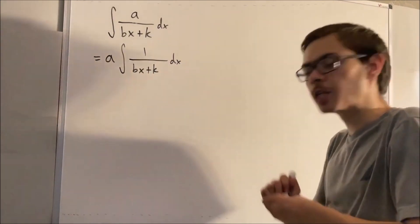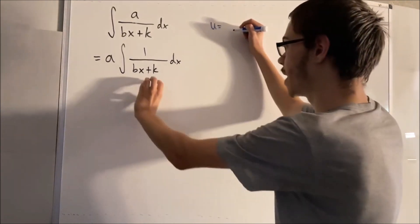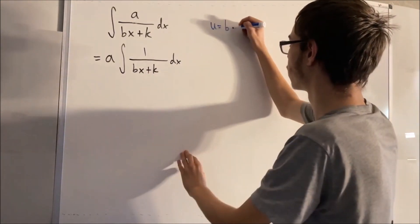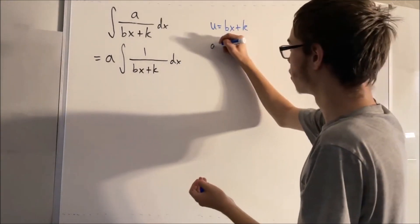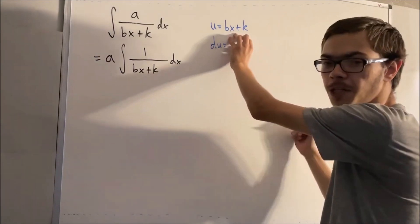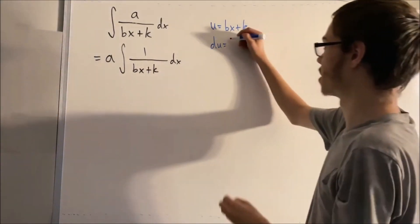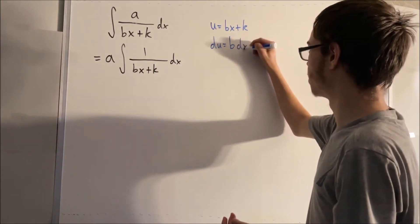Because if we do that, so we set u equal to what we have in the denominator, which means du is just going to be the derivative of what we have here with respect to x, which is just going to be b. And of course we have to include the dx.